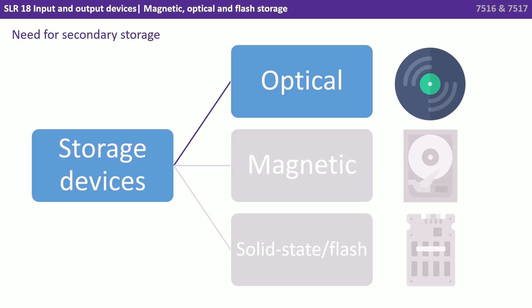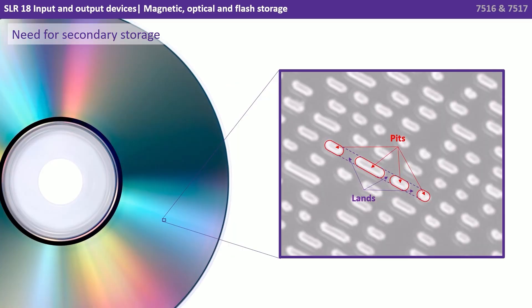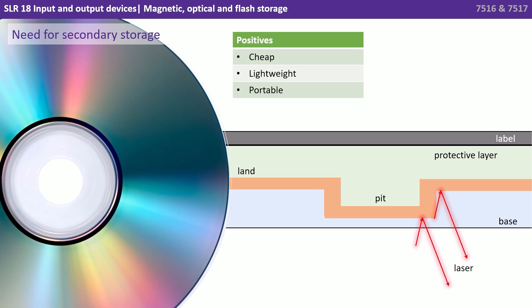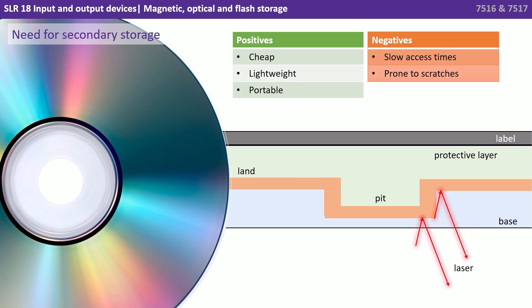Let's start with optical storage. Optical storage uses a series of pits and lands which are etched into the surface of the optical device. If you zoomed in and magnified really far, you can actually see these little pits and lands etched in concentric circles around the optical device. A laser can then be bounced off the optical device as it's spinning, and the interference caused can be read and interpreted as a digital signal — a one and a zero. They're cheap, lightweight and highly portable, but they have relatively slow access times and they can be pretty prone to scratches.